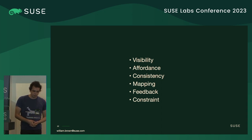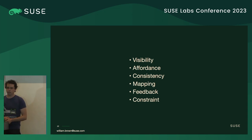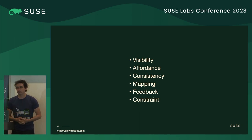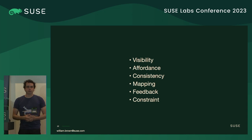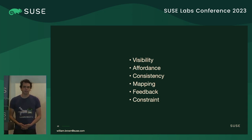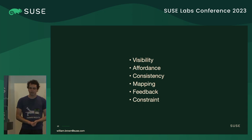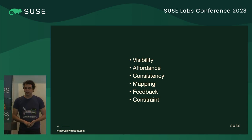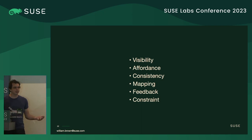"The Design of Everyday Things" was a book by Don Norman, a psychologist who went on to work with Apple on user design and interface. As a brief overview, there are six main concepts within design that are very important for how humans think about interacting with things: visibility, affordance, consistency, mapping, feedback, and constraint.